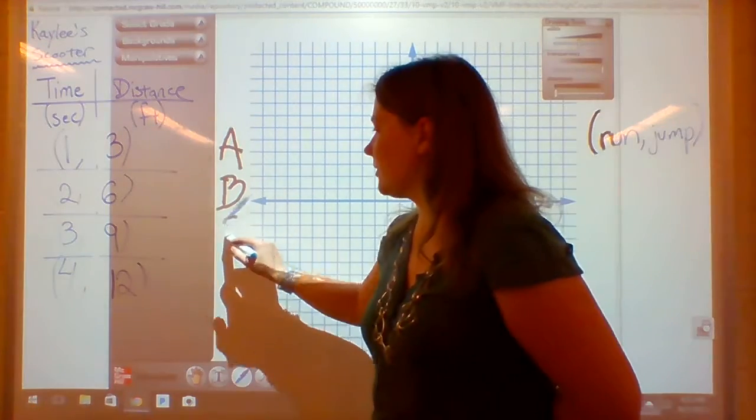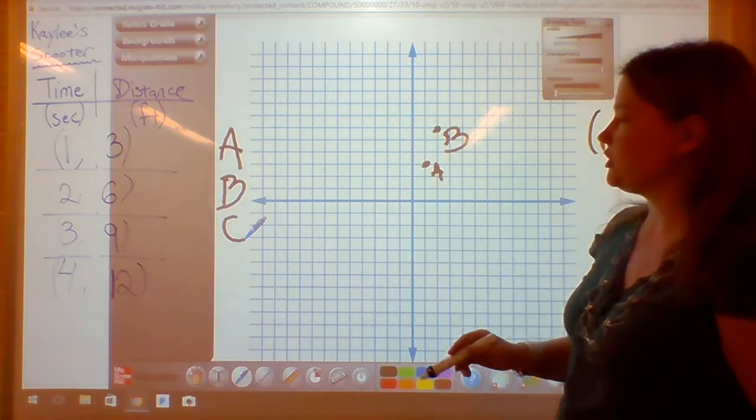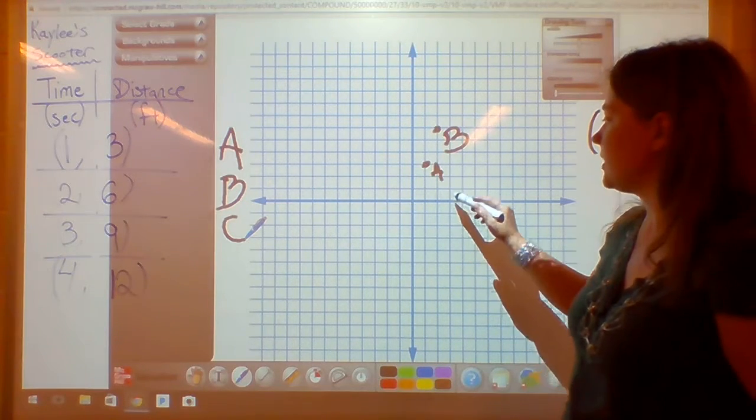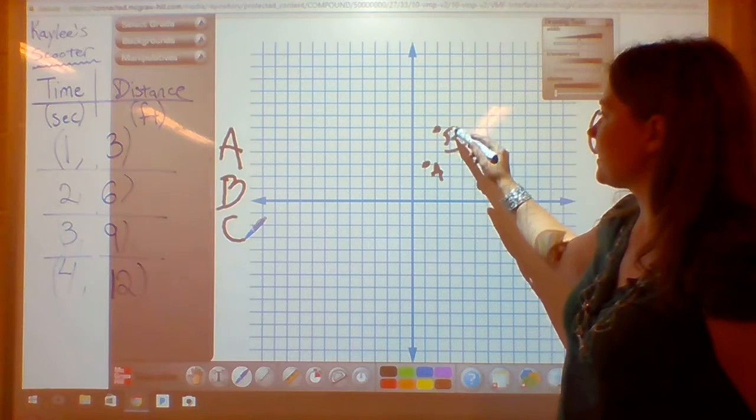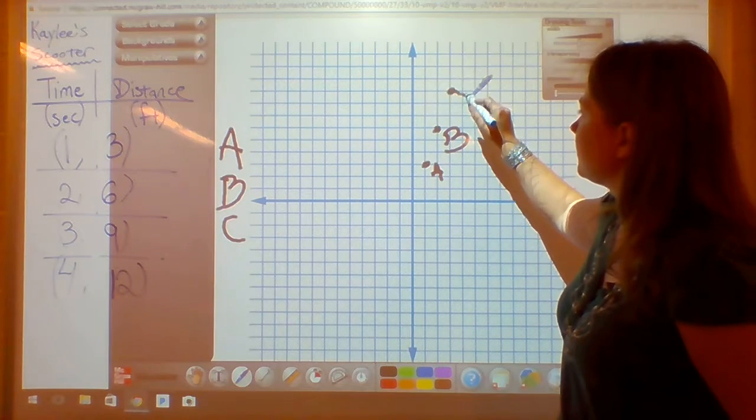I'll continue doing that with the next point, point C. That's going to be run 3, jump 9. 1, 2, 3. 1, 2, 3, 4, 5, 6, 7, 8, 9. And that will be point C.